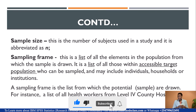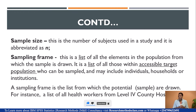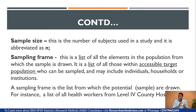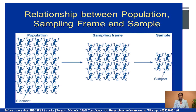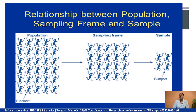This figure shows the relationship between the population, the sampling frame, and the sample. The population being referred to here is the accessible target population. From there, we draw the sampling frame, and from the sampling frame we draw our sample. Each individual in a population is called an element; each individual in a sample is called a subject.